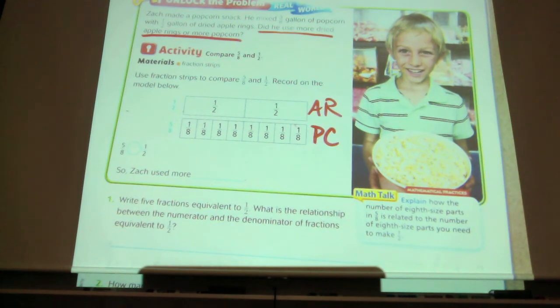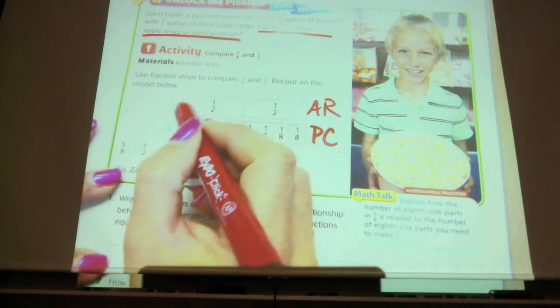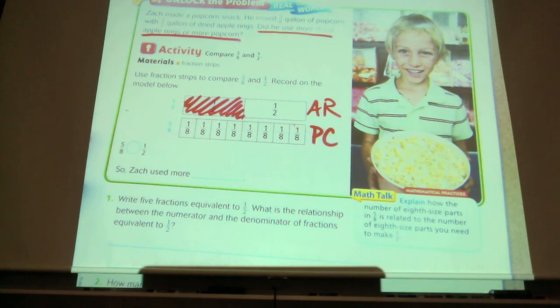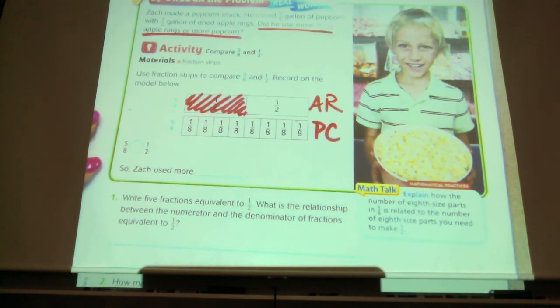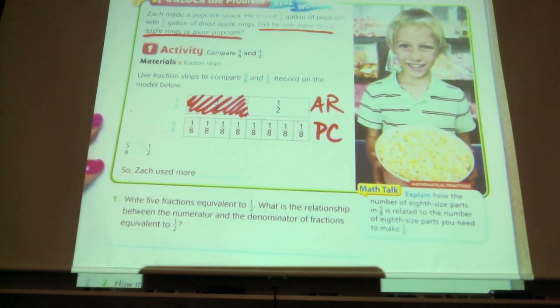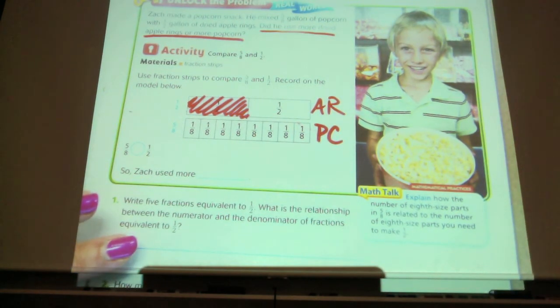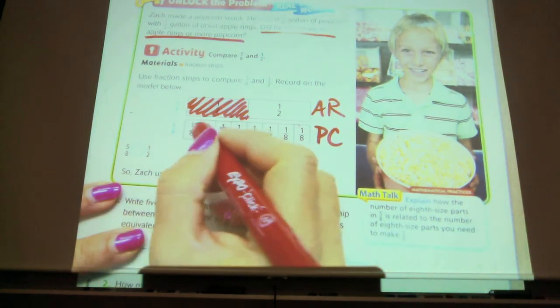How much of a gallon is dried apples? One half. One half of a gallon. So we're going to shade that in. Look back at the problem and decide how much of a gallon of popcorn. Raise your hand when you're ready. So how many gallons of popcorn? Five-eighths.